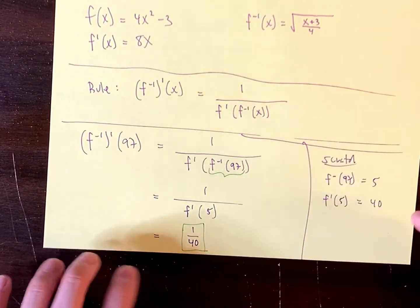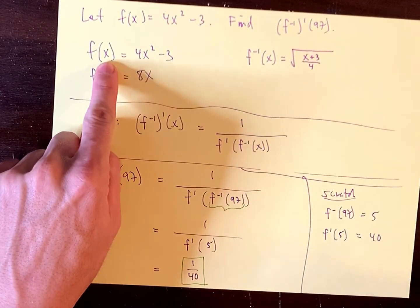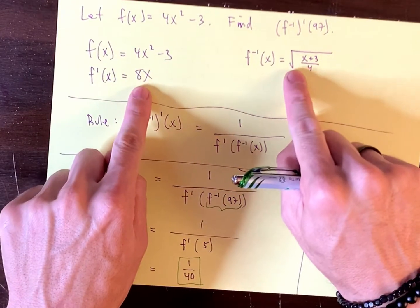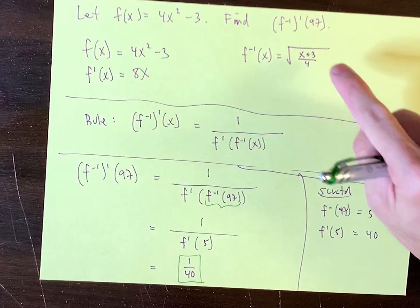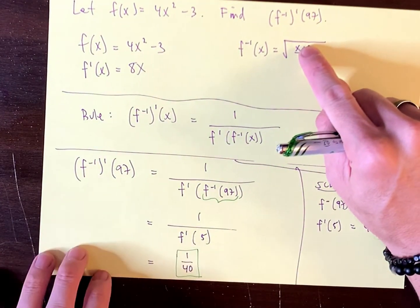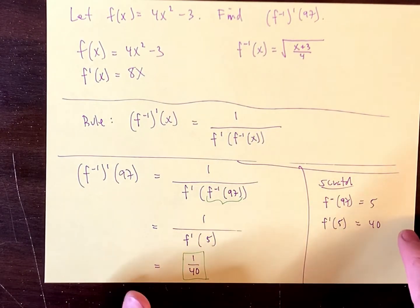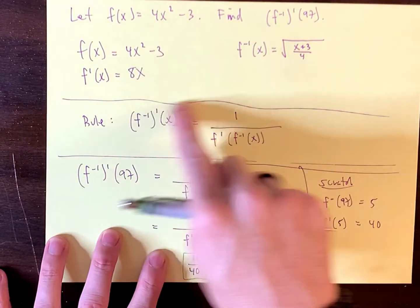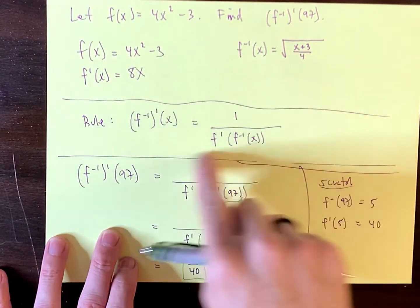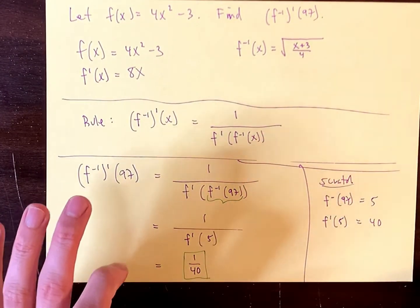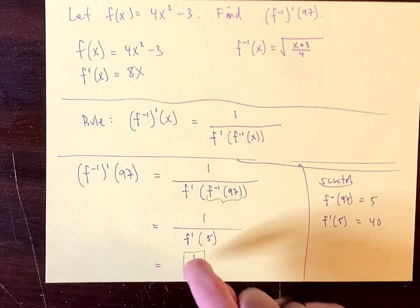So the lesson to be learned here, they give you some function f. Finding the inverse and finding the derivative of the original, they're probably not that bad. But finding the derivative of the inverse can sometimes be unmanageable. So in those instances, students are recommended to employ this rule, which really can come in clutch sometimes. So there you have it. I hope that helped. Let me know if you have any questions. Final answer is right here, 1 40th.